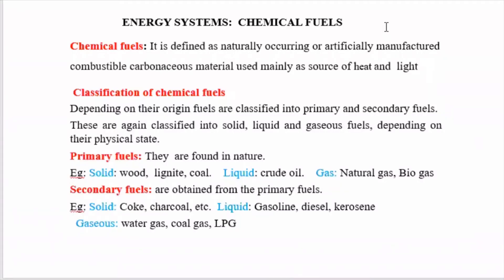Module 3: Chemical Energy Sources and Solar Cells. First unit: Chemical Fuels. Energy is required for various activities. Energy sources can be classified into two groups: renewable energy sources and non-renewable energy sources. Renewable energy sources, when consumed, can be re-extracted — examples include solar energy, wind energy, and hydroelectric power. Non-renewable energy sources, when consumed, cannot be re-extracted — examples include fossil fuels like petrol, diesel, and nuclear energy.